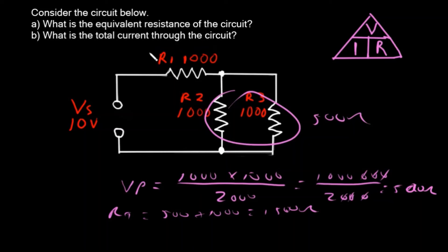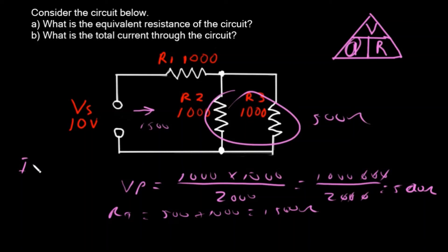Part B: what is the total current through the circuit? Now that we know the total resistance the voltage source sees is 1,500 ohms, finding the current is straightforward using Ohm's Law: I equals voltage divided by resistance, which is 10 volts divided by 1,500 ohms, and that comes out to 6.7 milliamps, or 0.0067 amps.